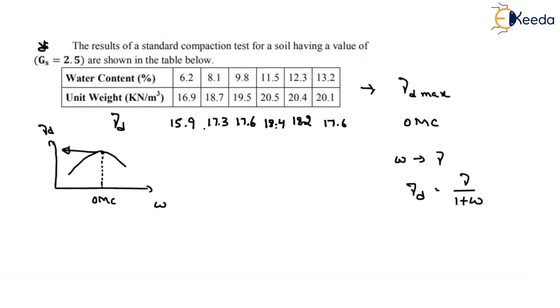So at water content 11.5, you are getting the maximum dry density. So corresponding to these values, what is the optimum moisture content? We can say it is 11.5%. So what is the maximum dry density that is possible? Then 18.4 kN per meter cube.